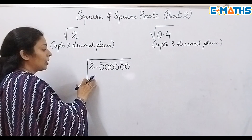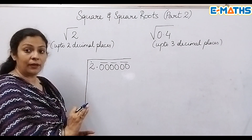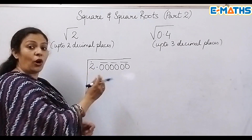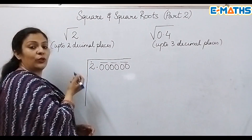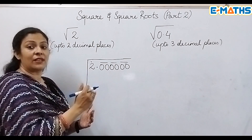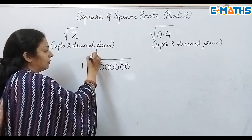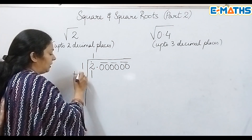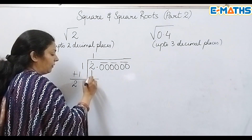Here we have 2. I need to take a number which when multiplied by itself gives 2 or a number less than 2. We don't have any such number that multiplied by itself gives us exactly 2, so I'll take a 1 here, 1 up here, and 1×1 gives me 1. This gives me a 1 here and we subtract, so I'm getting a 1 remainder.